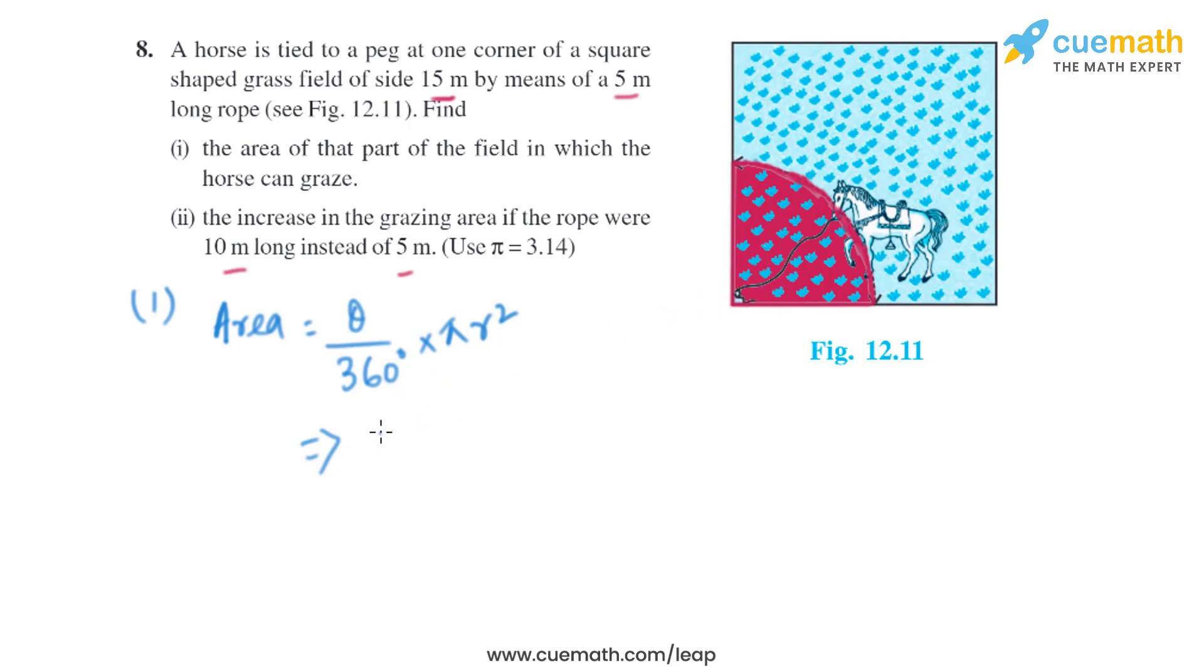So it will be 90 degrees divided by 360 degrees multiplied by 3.14, and the length of the rope is given as 5 meters, which is basically the radius. On solving this, we get the area as 19.625 square meters.